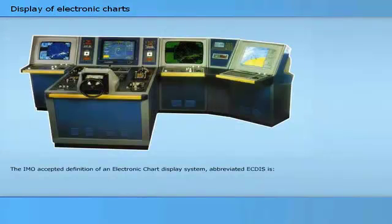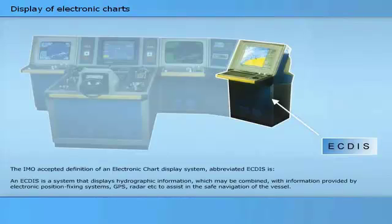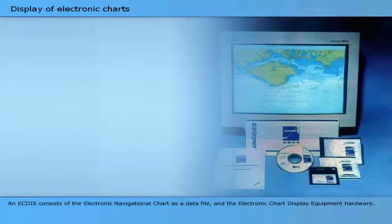The IMO accepted definition of an electronic chart display system, abbreviated ECTIS, is: a system that displays hydrographic information, which may be combined with information provided by electronic position fixing systems, GPS, radar, etc., to assist in the safe navigation of the vessel. An ECTIS consists of the electronic navigational chart as a data file and the electronic chart display equipment hardware.